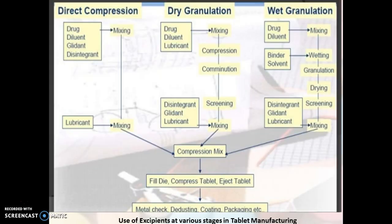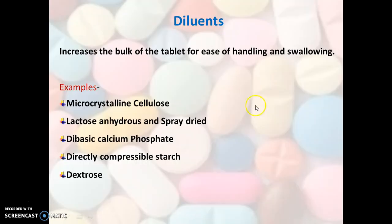This is a typical flow diagram representing the various methods of tablet manufacturing: direct compression, dry granulation, and wet granulation. You can see the use of various excipients during the manufacturing. Whether it is direct compression, dry granulation, or wet granulation, the use of excipients is inevitable.